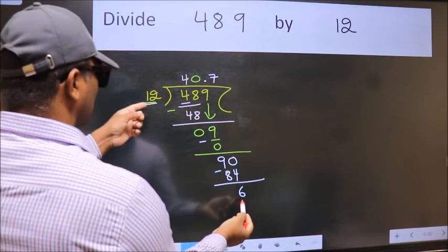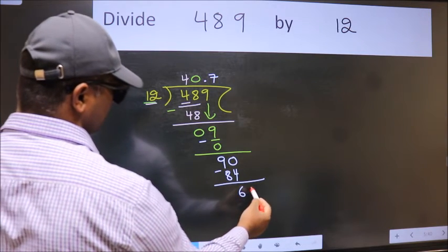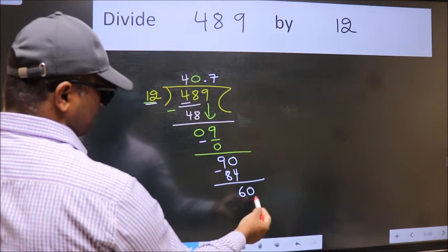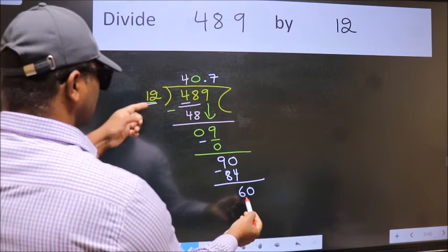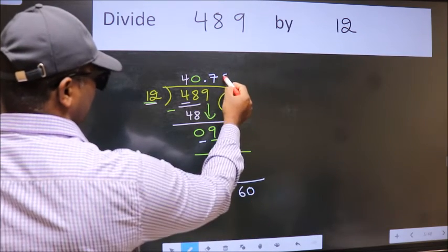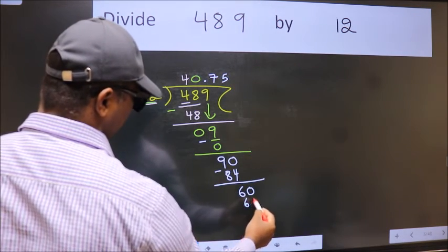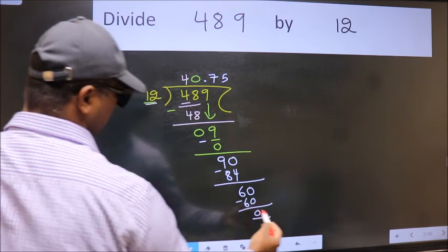6 is smaller than 12. We already have the decimal, so directly take 0. 60. When do we get 60 in the 12 table? 12 times 5 is 60. Now we subtract and get 0.